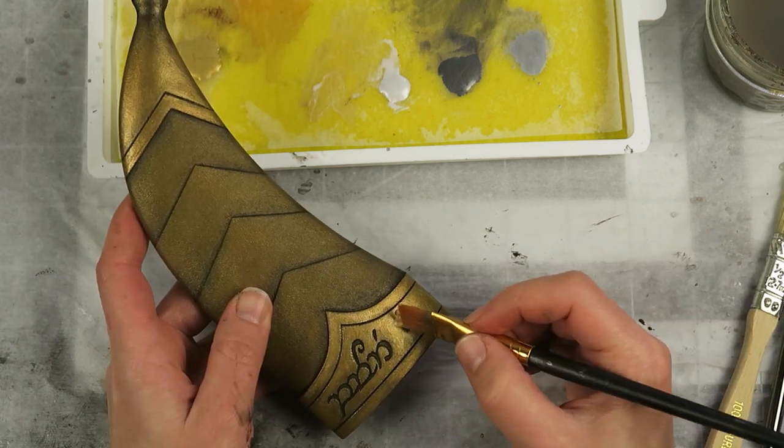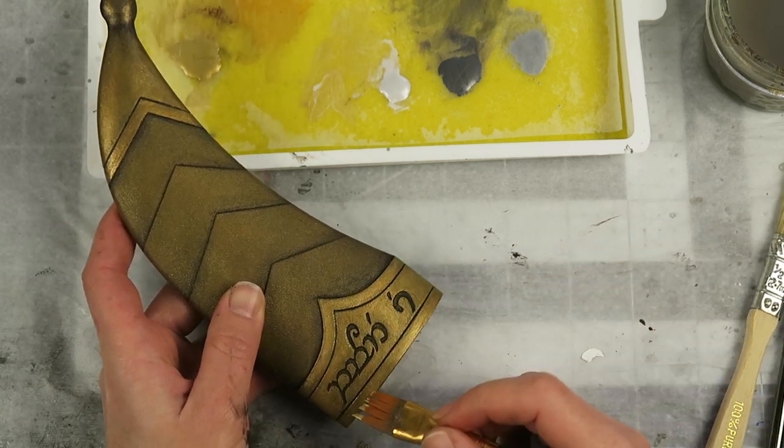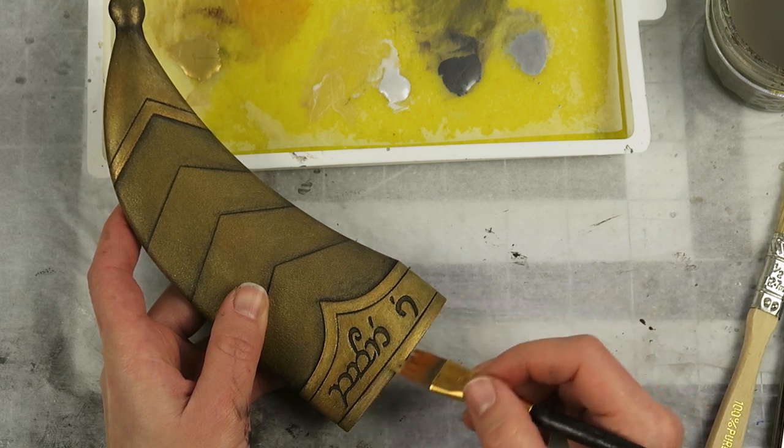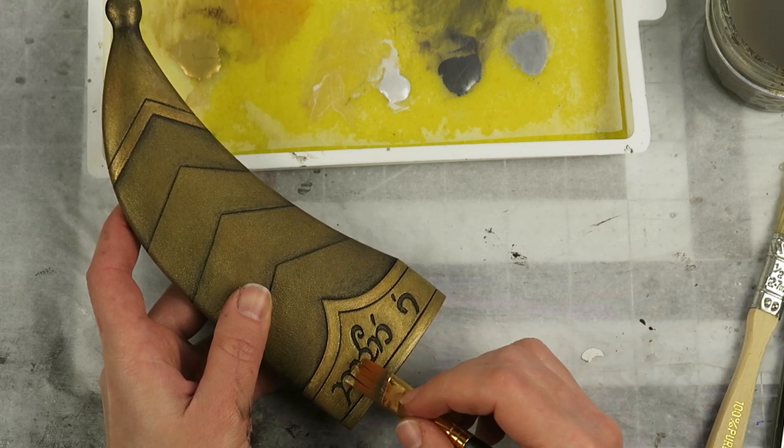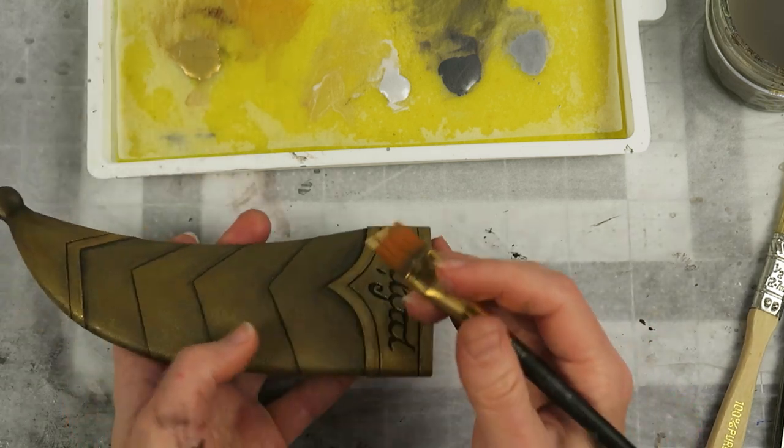I always add some silver to my gold for the highlights. I find just plain gold looks really flat and uninteresting, but once you add in just a touch of that bright silver, it enhances the metallic effect.